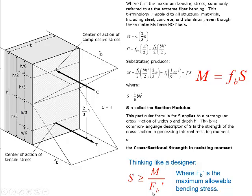F sub B prime is the maximum allowable bending stress in that material. This allowable value has already taken into account safety factors — so we no longer have load factors for this material, but we do have safety factors built into the tabulated values. There will be tables that tell us what the maximum allowable bending stress is, and that allows us to calculate the required section modulus.